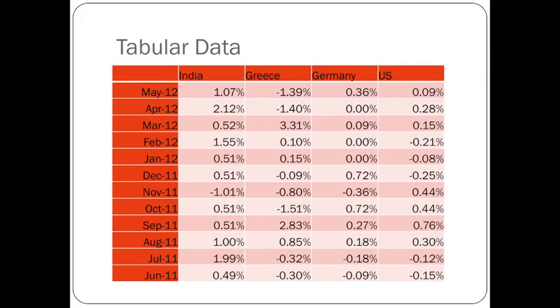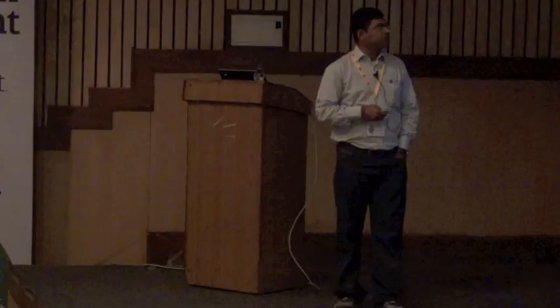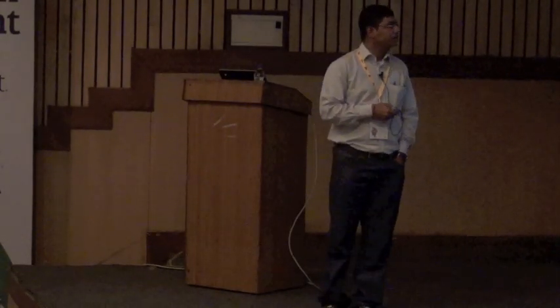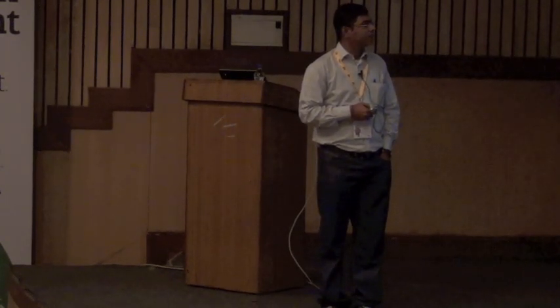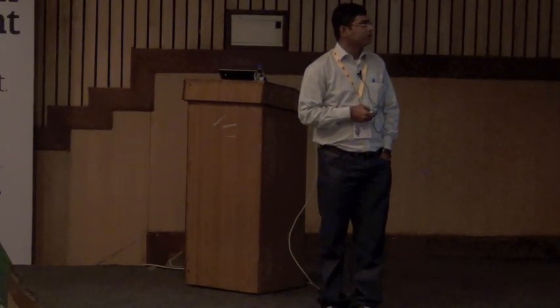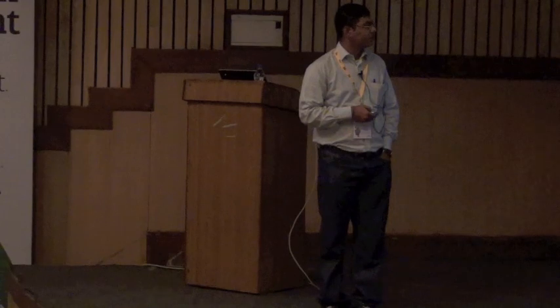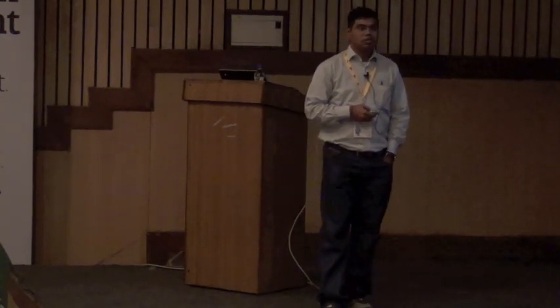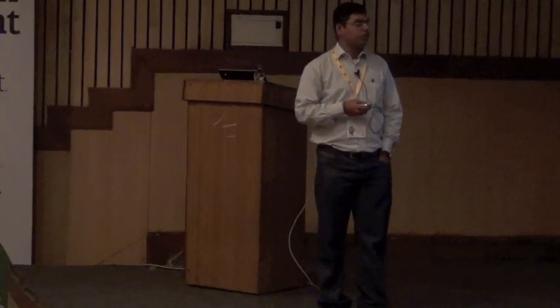This is tabular data. It talks about four different countries — India, Greece, Germany, and the US — and it carries month-on-month inflation represented in a tabular format. If you read this particular slide, maybe you can figure out that in the month of April inflation increased quite high. It is typically low, but there have been certain months, for example March and September, where it increased a lot. It still takes a lot of time for humans to look at a tabular format and make sense out of the data.